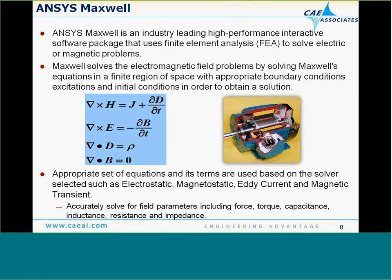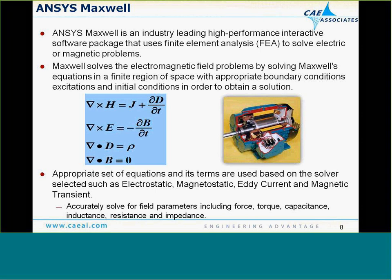To do electromagnetic analysis, we're going to look at ANSYS Maxwell — an industry-leading, high-performance, interactive software package that uses finite element analysis to solve electric and magnetic problems. Electromagnetic problems are solved using Maxwell's equations in a finite region of space with appropriate boundary conditions and excitations. We can solve electrostatic, magnetostatic, eddy current, and magnetic transient problems, and obtain field parameters such as electric field, magnetic field, force and torque, capacitance, inductance, and more.